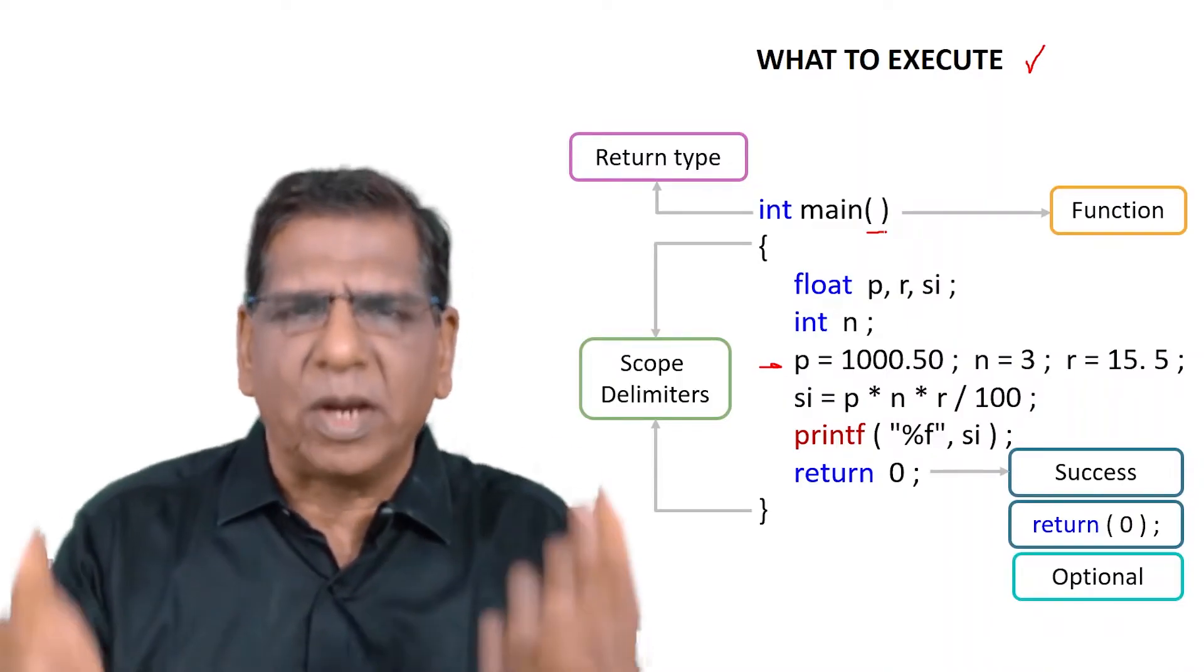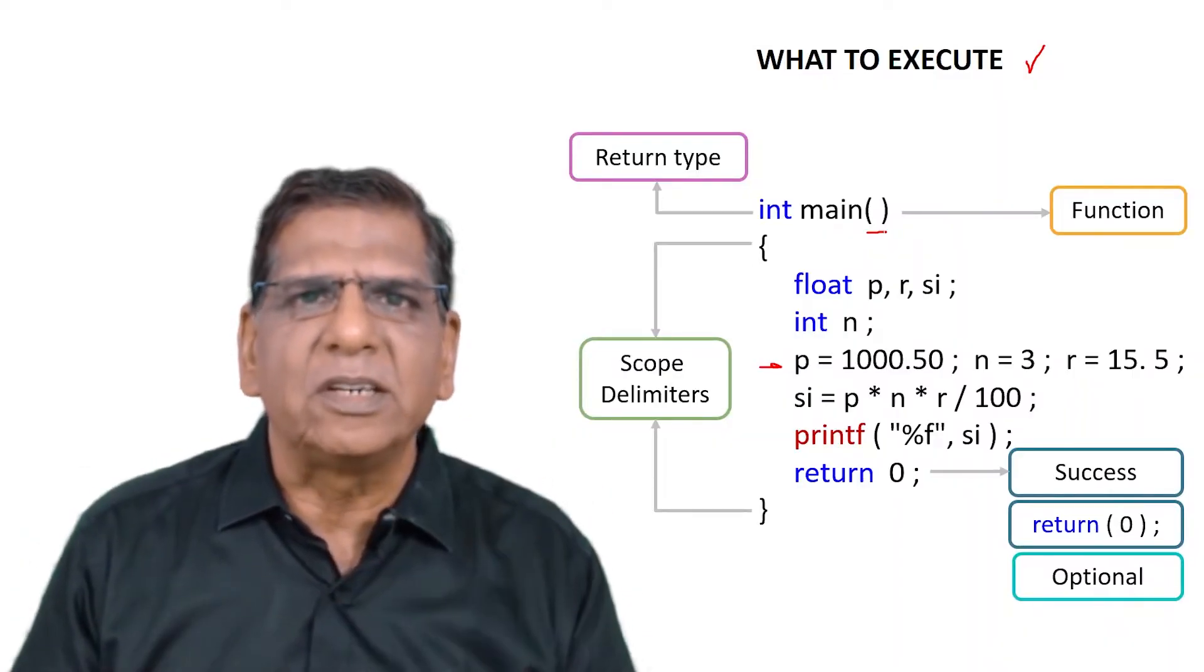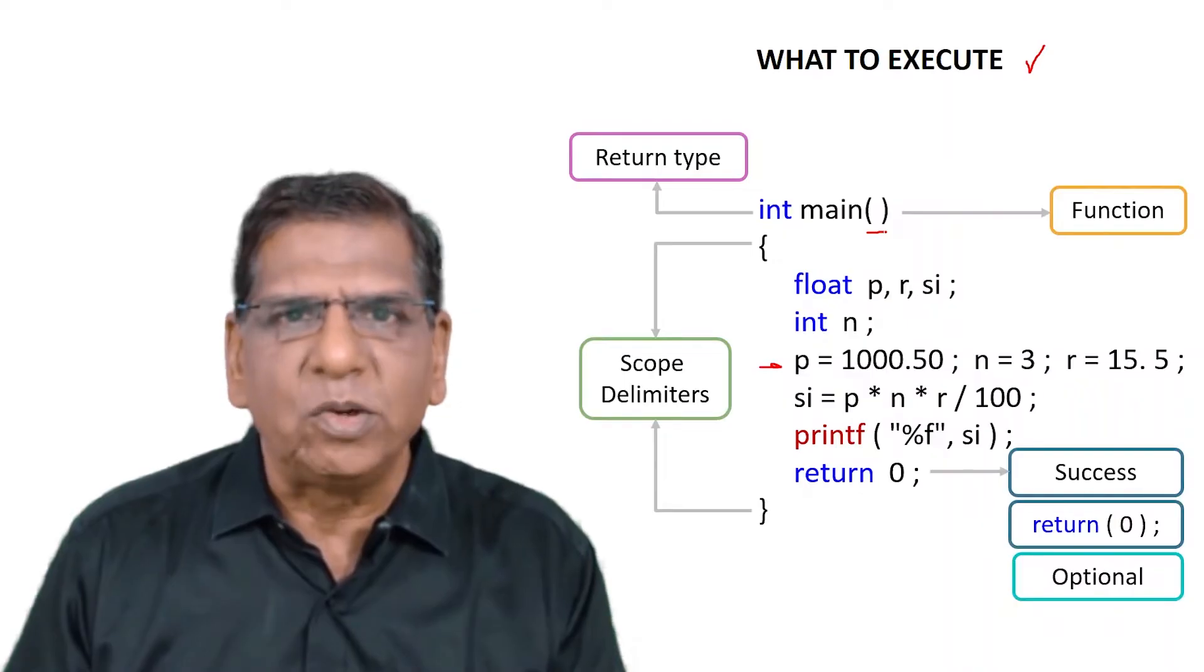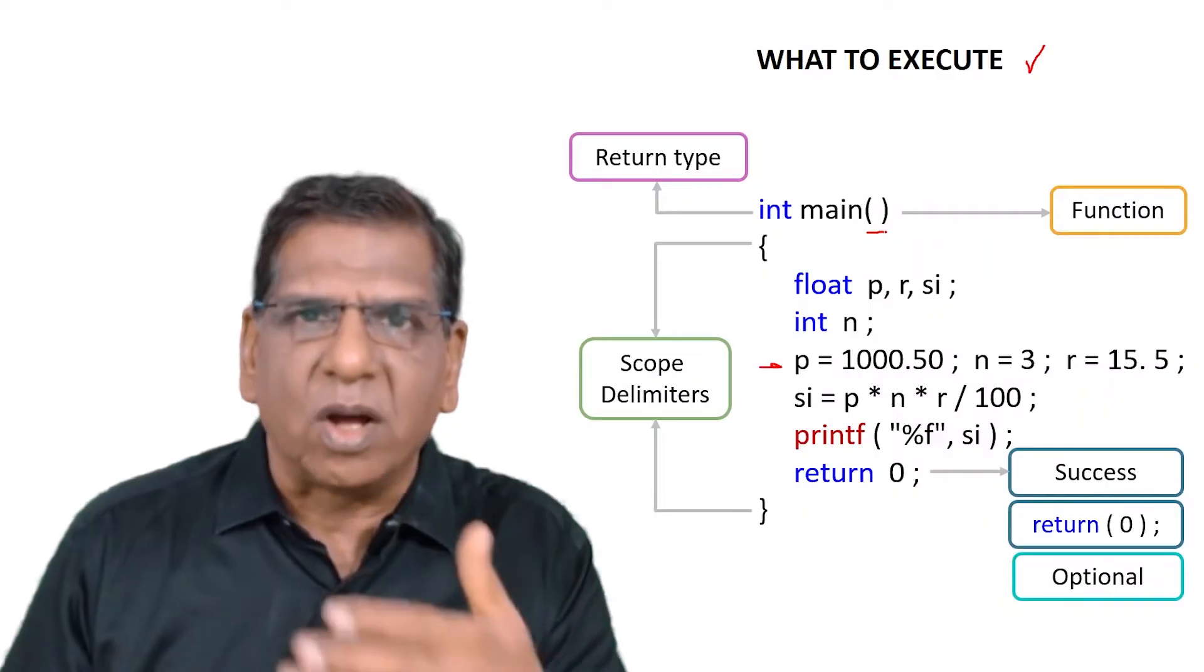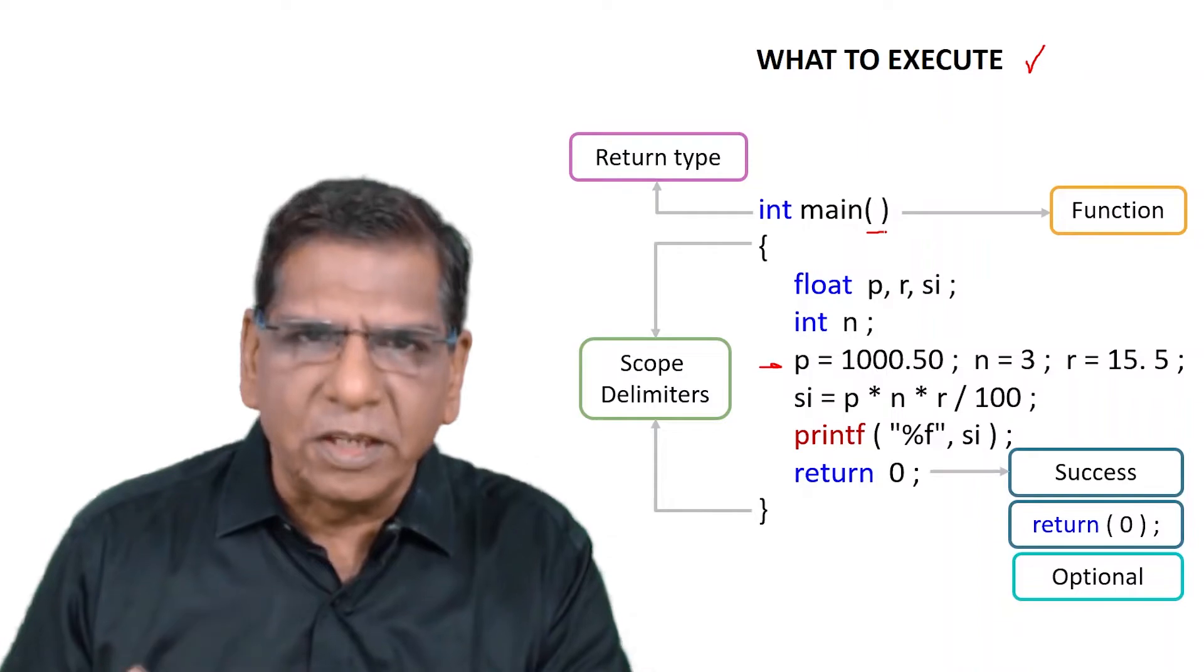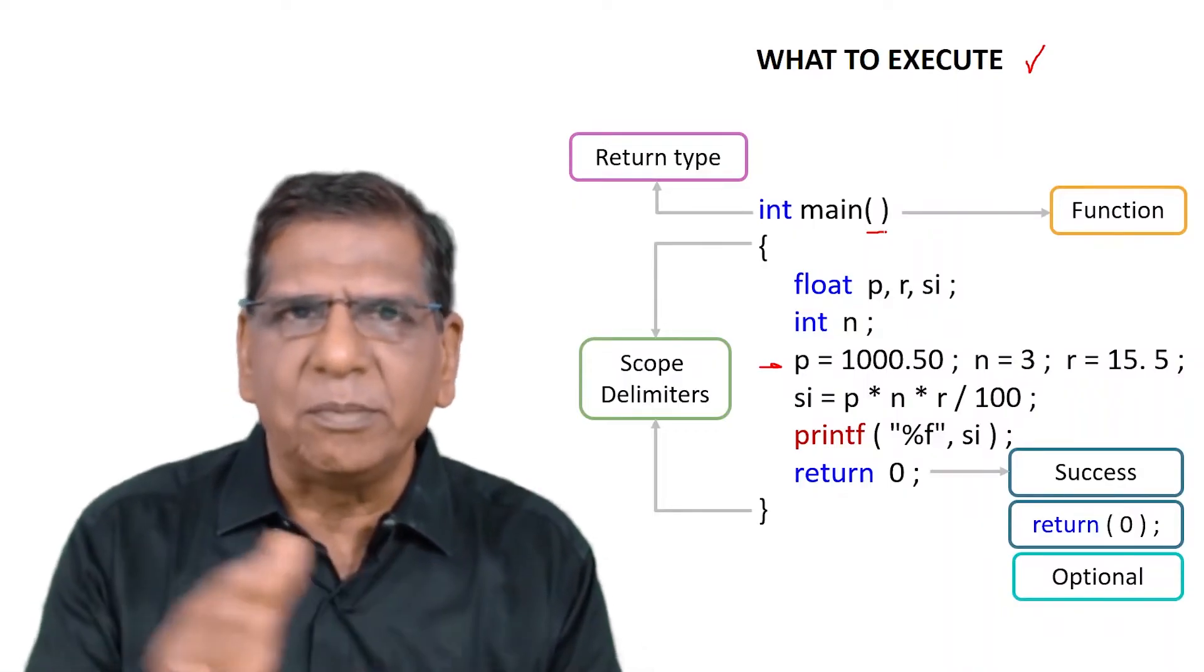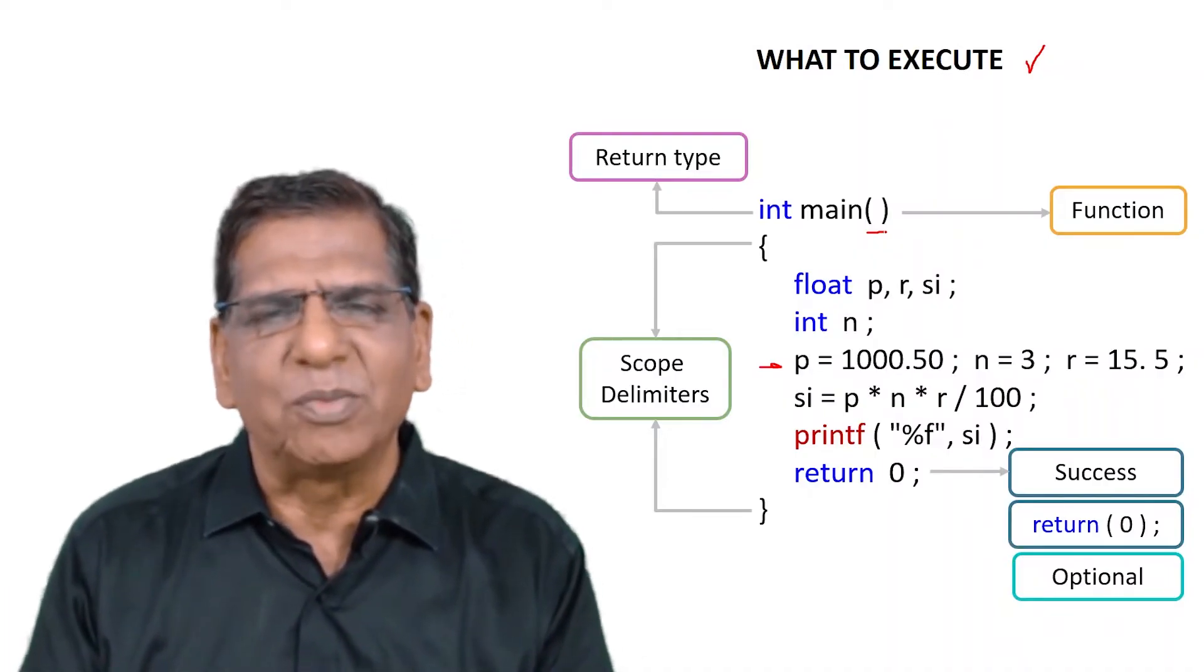Tomorrow in some other program you have maybe 100 statements, and within those 100 statements there are several operations that you are carrying out. If one of the operation fails, you may return a value 10. If another operation fails, you may return a value 20. If the third operation fails, you may return a value 30. So these non-zero values that you return, they always indicate failure. If there is no failure in all the 100 statements, then at the end you can return a success by saying return zero. So always say int main at the top and return zero at the bottom, part and parcel of every C program.